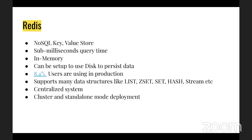Redis is a key-value store that performs operations in milliseconds — sometimes even under five milliseconds. It's an in-memory data store that can also be set up with disk persistence, so data is preserved even if the server crashes. Currently 8.5% of production systems are using Redis. It supports many data structures like lists, ZSets (sorted sets), streams, maps, and others. It can be deployed in standalone, cluster, or sentinel mode.